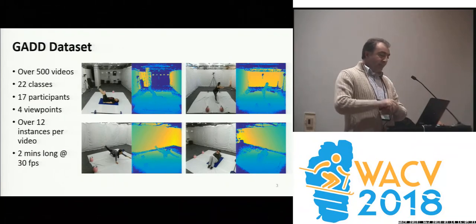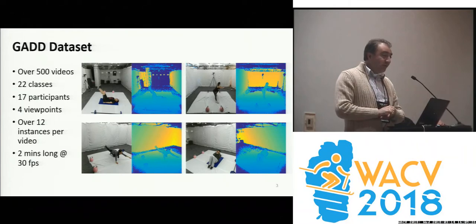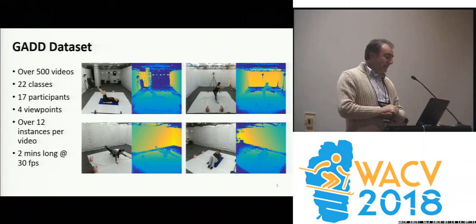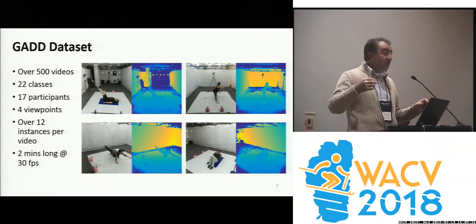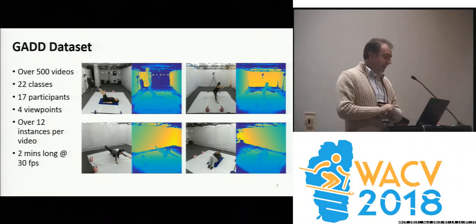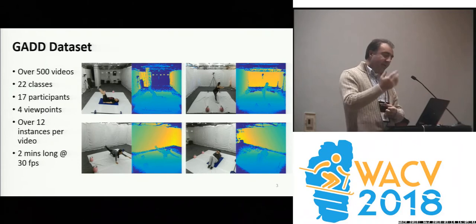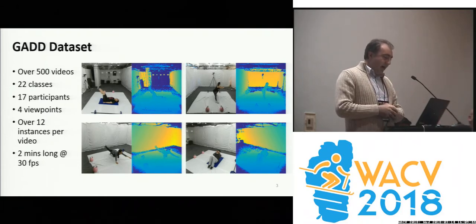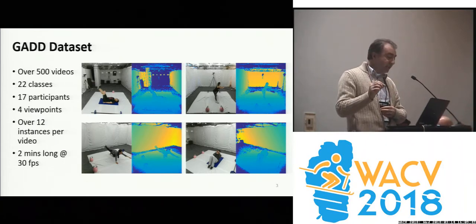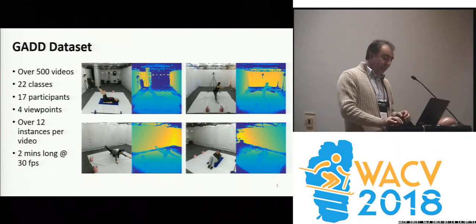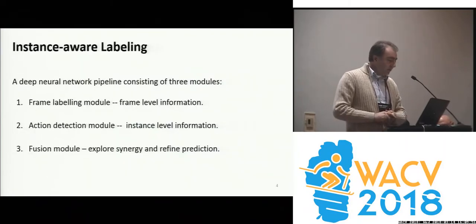About the dataset: we have over 500 videos — my student painfully recorded all of them. There are 22 action classes, 17 participants with better physics than myself, and four different viewpoints. This includes depth sequences and RGB images. There are over 12 action instances per video, each video is two minutes long at 30 frames per second. Please download and use it for your research.